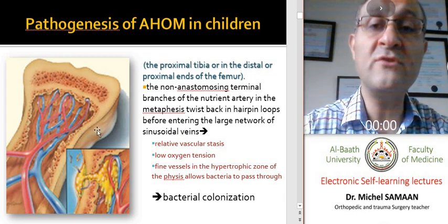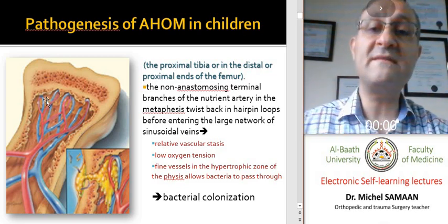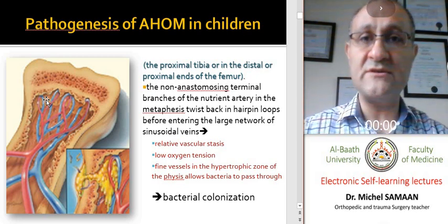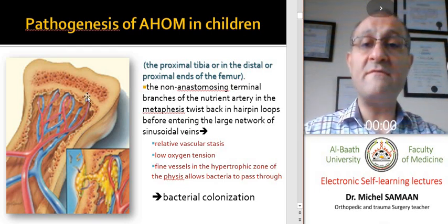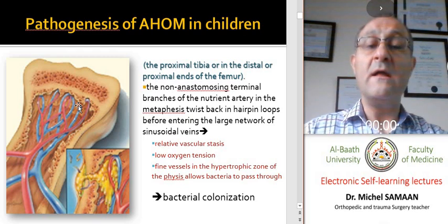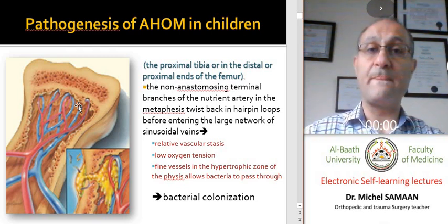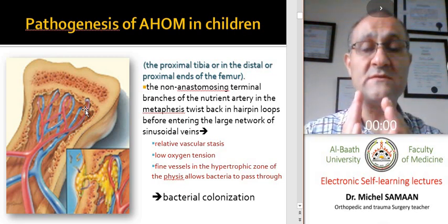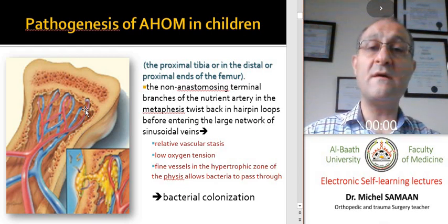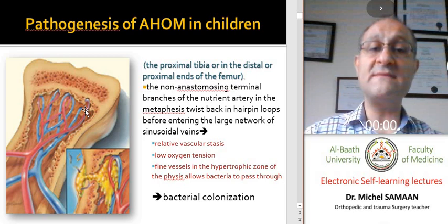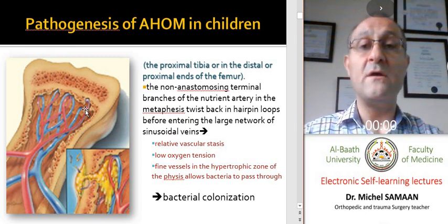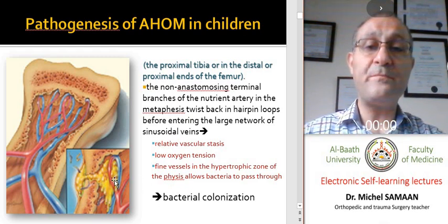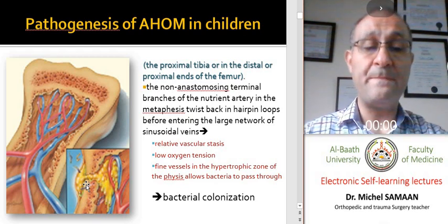In children, the main site of hematogenous osteomyelitis infection is at the metaphyseal region. Why is it the main site? Because the vascular supply, when they reach the metaphyseal region, they twist back in a hairpin loop before entering the large sinusoidal veins. In this area, we have relative vascular stasis, low oxygen tension, and fine vessel walls that facilitate the passage of bacteria to the neighboring tissue and especially to the hematoma site formed because of the trauma. This bacterial colonization becomes evident in this hematoma site and causes abscess formation.